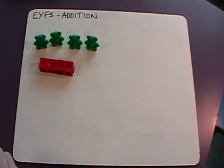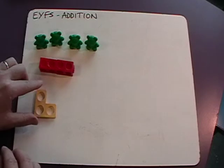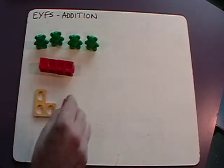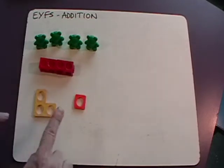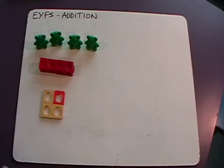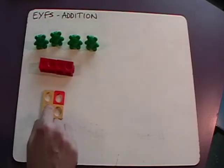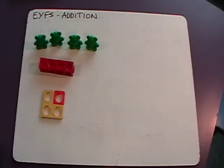And we could also use Numicon tiles. So we've got a three tile and then we've got one more. We bring those tiles together and then we can count up: one, two, three, four all together.